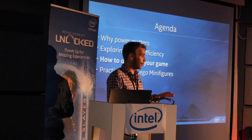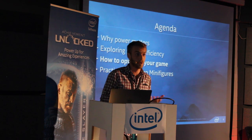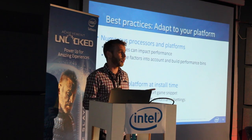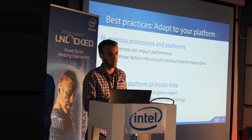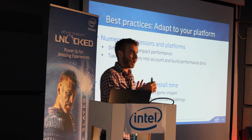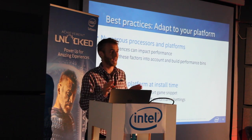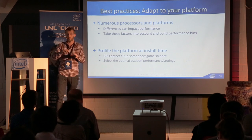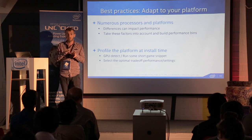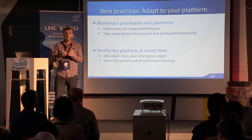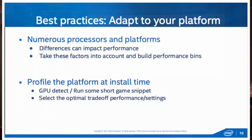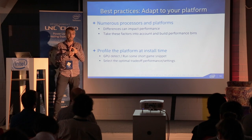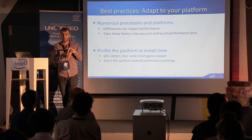So here are some best practices — simple things you can do in your games to save power. Rule number one, for every game on every platform: adapt to your platform. There are a huge number of platforms with different CPUs, different graphics, different memory speeds, different power available, and all of those factors impact your game's performance. If you want your game running great on all those platforms, at runtime when you first start the game, scan the hardware available on the system and set the settings so that it's actually going to run — because it's really horrible when you download a game and it starts at 2 FPS.